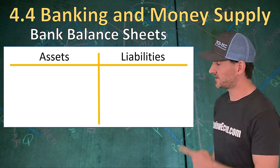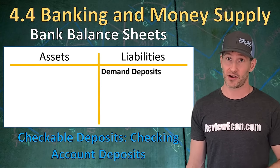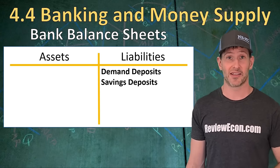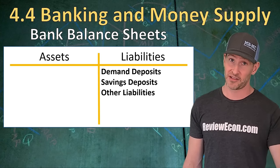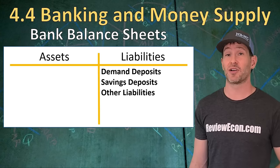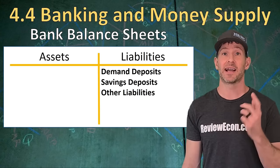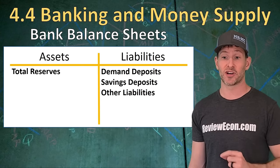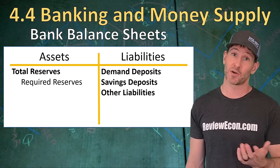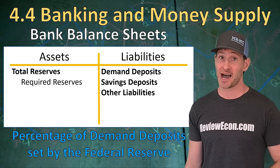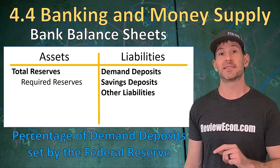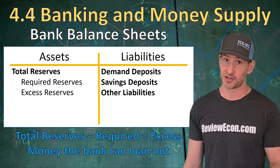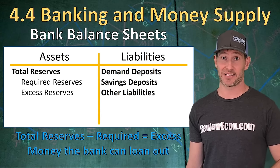On the liability side, we have demand deposits — also called checkable deposits — which are checking account deposits owed to the bank's customers. Savings deposits are also there, and they are a liability because they are owed to other people. Finally, we have other liabilities, such as loans the bank owes to other banks or to the Federal Reserve, or profit — sometimes called owner equity — owed to the owners of the corporation. On the asset side, we have total reserves: the funds available to the bank. These break into required reserves — a percentage of checkable deposits set by the Federal Reserve — and excess reserves, which are the funds the bank can loan out. To find excess reserves, take total reserves, subtract required reserves, and what's left is excess reserves.